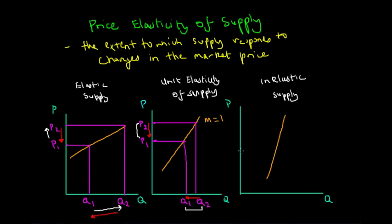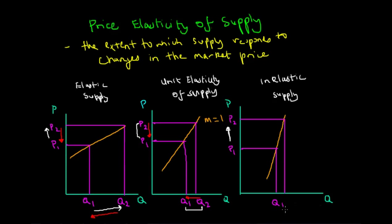If the price of a good or service starts off at P1, that corresponds to a quantity supplied of Q1. If this price increases dramatically to P2, producers should in theory increase their production. But since the supply is inelastic, the corresponding quantity supplied at P2 is proportionately less than the increase in price — there is only a slight increase in quantity supplied to Q2.